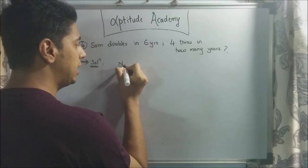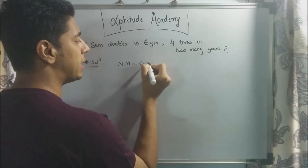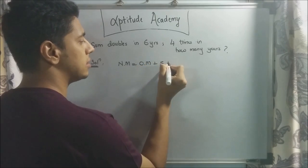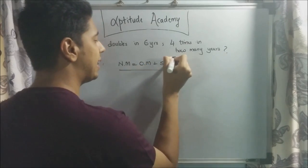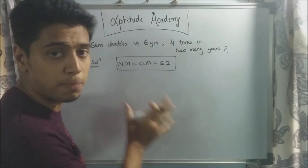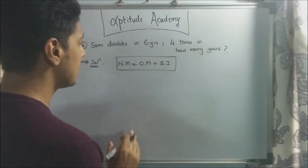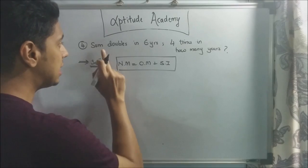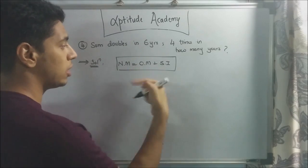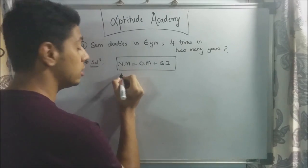We know that new money is equal to old money plus simple interest. If you don't recognize this equation, you need to go and watch part one of my simple interest series. Your new money, they've said, is double your sum. Your sum is your principal. Your new money is two times the principal amount. It's double. Your old money is principal. What you've invested.